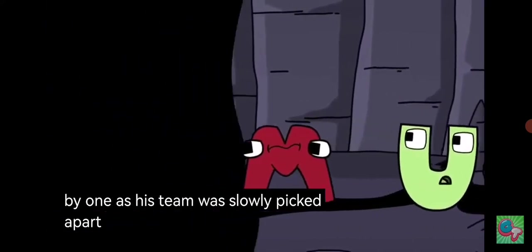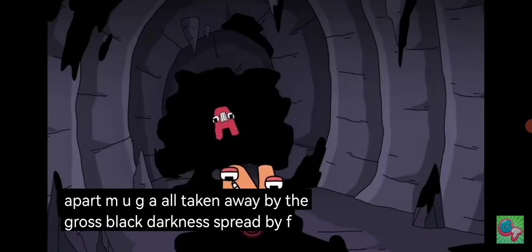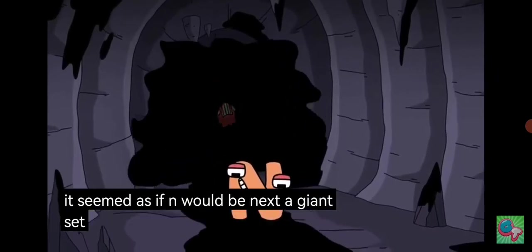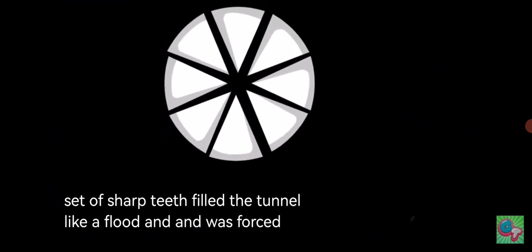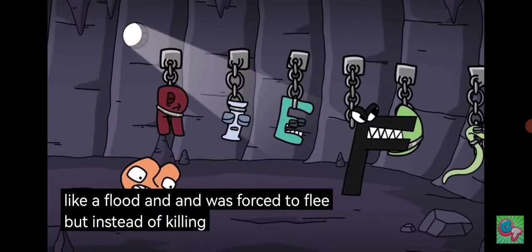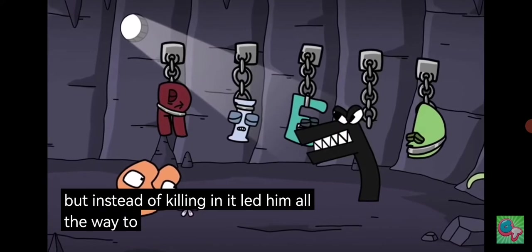As his team was slowly picked apart, M, U, G, A, all taken away by the gross black darkness spread by F, it seemed as if N would be next. A giant set of shark teeth filled the tunnel like a flood, and N was forced to flee. But instead of killing N, it led him all the way to F's inner sanctum.